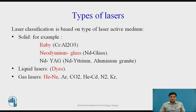The types of laser. Laser classification is based on the type of laser active medium. The three types are solid, liquid, and gas. In solid lasers, ruby and aluminum garnet are examples. In liquid lasers, dyes are used. In gas lasers, examples include helium-neon, argon, or carbon dioxide. These are some of the examples of laser materials.